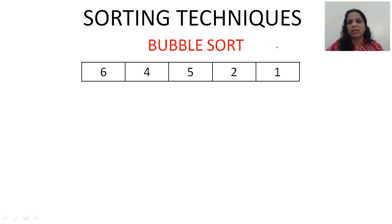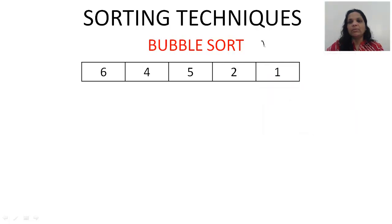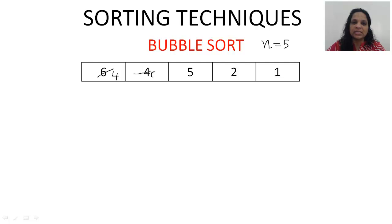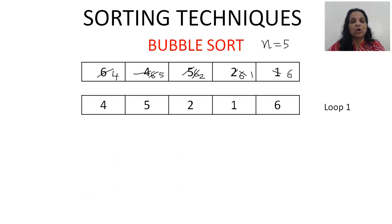Let me assume the value of n is 5 — five elements. So how many passes do we need? N minus 1, so 4 times. In pass 1: 6 is compared with 4, so 4 comes here and 6 goes there; then 6 is compared with 5, so 5 comes here and 6 goes there; then 6 is compared with 2, and 2 comes here and 6 goes there. That is the result of pass 1 — the biggest element has already reached the last location.